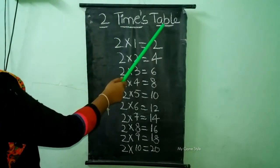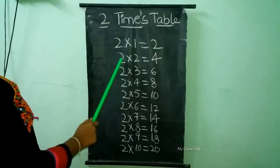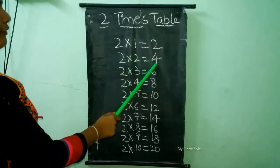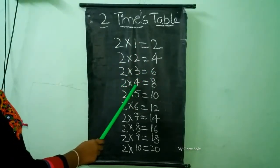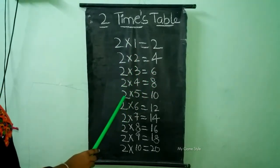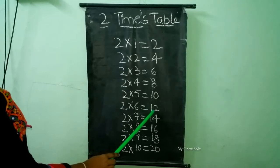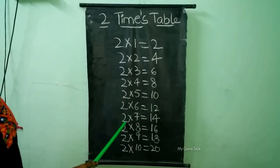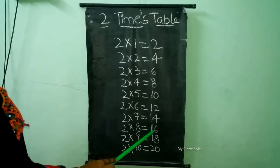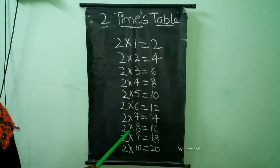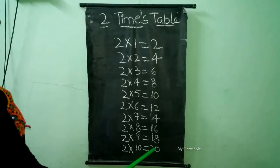2 times table. 2 times 1 is equal to 2. 2 times 2 is equal to 4. 2 times 3 is equal to 6. 2 times 4 is equal to 8. 2 times 5 is equal to 10. 2 times 6 is equal to 12. 2 times 7 is equal to 14. 2 times 8 is equal to 16. 2 times 9 is equal to 18. 2 times 10 is equal to 20.